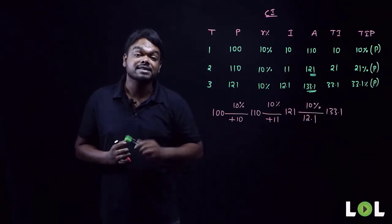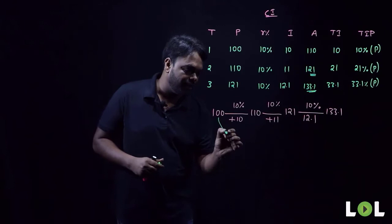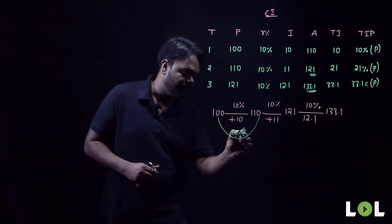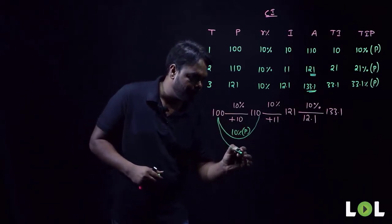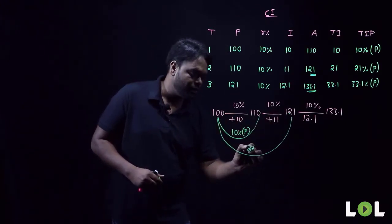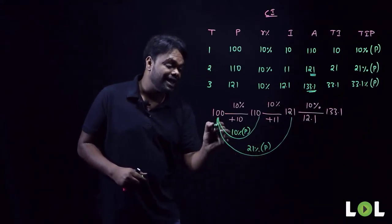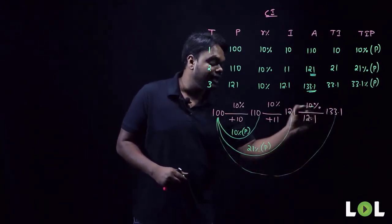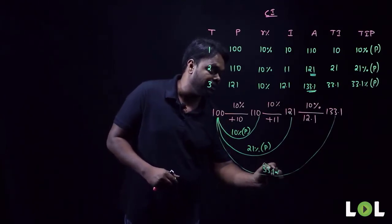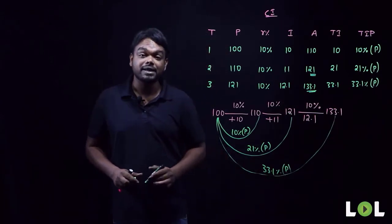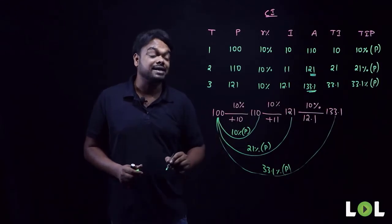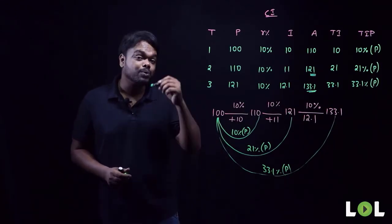First year: 10 rupees interest, that is 10 percent of principal. Second year: 100 to 121, paying 21 rupees interest, that is 21 percent of principal. For three years: 100 to 133.1, that is 33.1 rupees extra, which is 33.1 percent of principal. So in compound interest, our TIP can be calculated using the successive percentage formula.